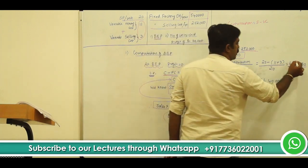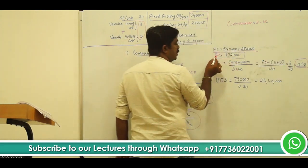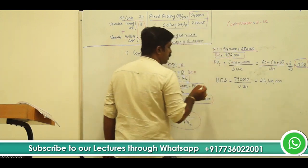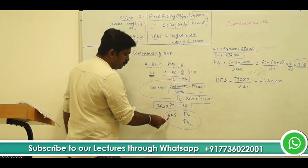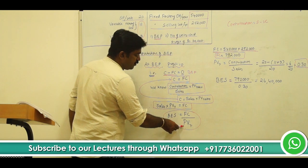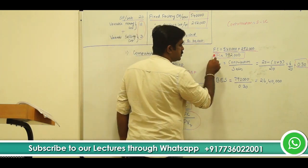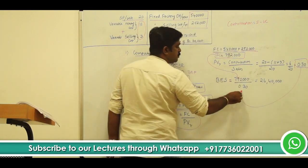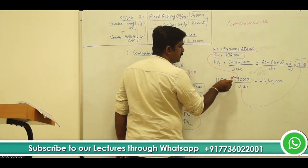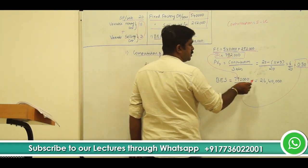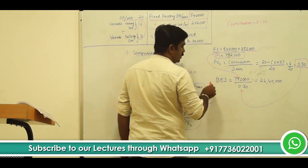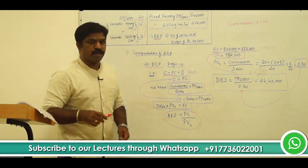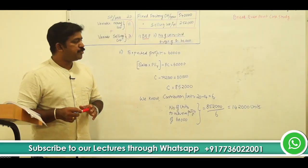Now we have two critical pieces of information: fixed cost of 7,92,000 and PV ratio of 0.30. Applying the formula — break-even sales equals fixed cost divided by PV ratio — we get 7,92,000 divided by 0.30, which equals Rs. 26,40,000. This 26,40,000 is your break-even sales.